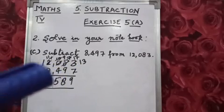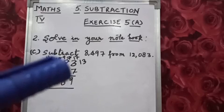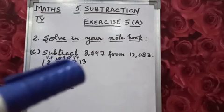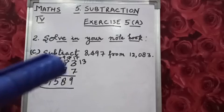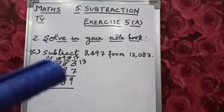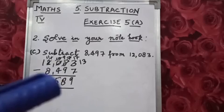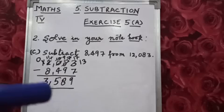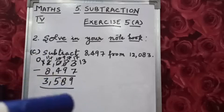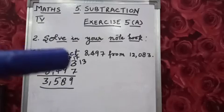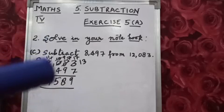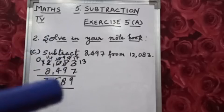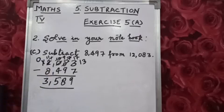Now 2 became 1. It will take borrow again, so this 1 will become 11. So 11 minus 8 is 3, and this 1 becomes 0. After subtraction you will get 3,589. Recap: 13 minus 7 is 9, 17 minus 9 is 8, 9 minus 4 is 5, 11 minus 8 is 3.